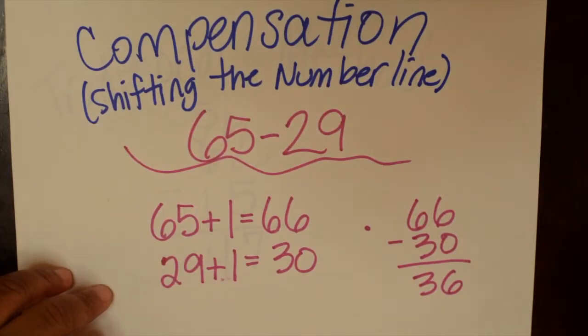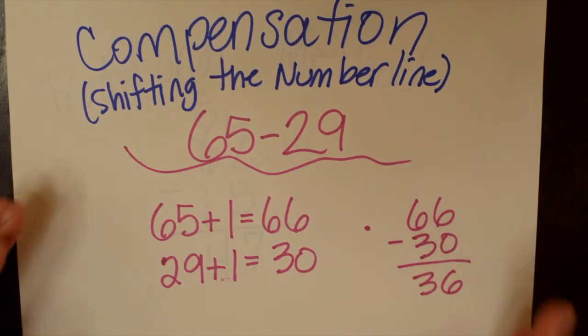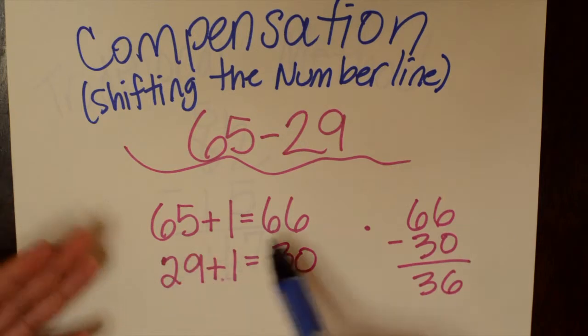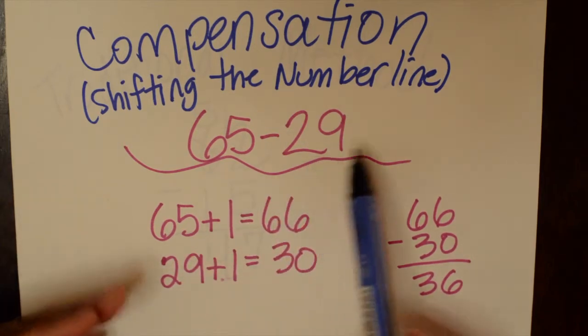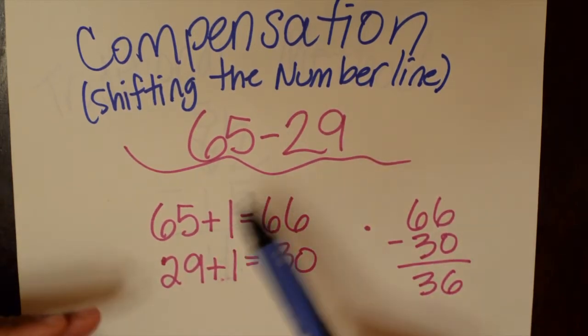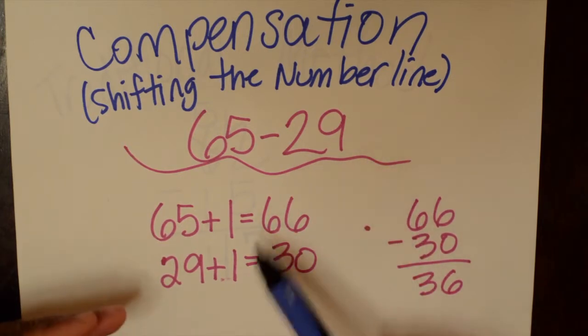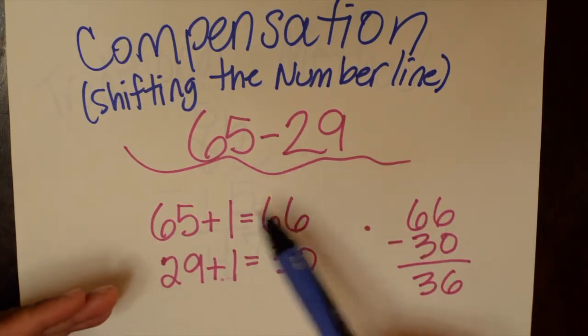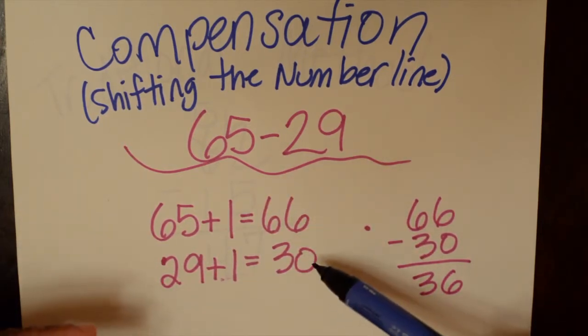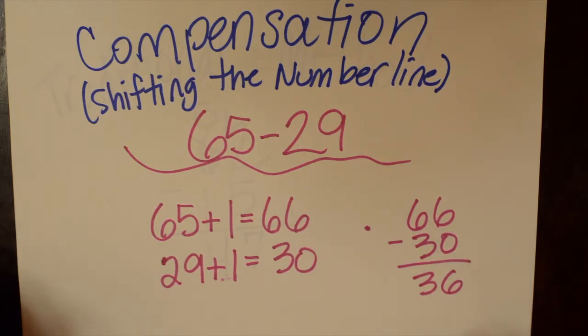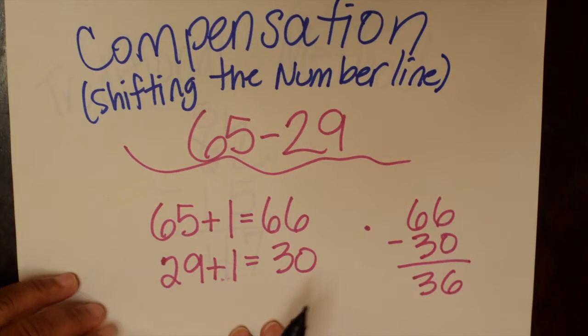Another strategy is compensation, or what we call shifting the number line. When you're subtracting, whatever you do to one number, you have to do the other number. So in this instance, if I want to get to 30 and take that away because it's easier, then I'm going to have to add 1 to 29, and I have to add 1 to 65. And so now I'll have an easier problem, I have 66 minus 30. So I just really shifted the number line, and the distance stays the same between the numbers.